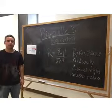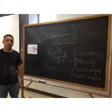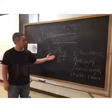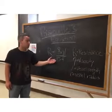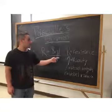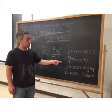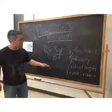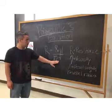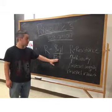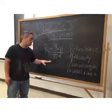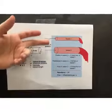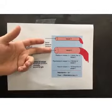This is Poiseuille's equation, another important equation for blood pressure: R equals 8ηL over π r to the fourth power. R equals resistance, η is viscosity, L is vessel length, and r is vessel radius. However, the only really important variable here is the radius, because the other two do not change significantly. When the radius decreases, the flow decreases; when the radius increases, the flow increases.